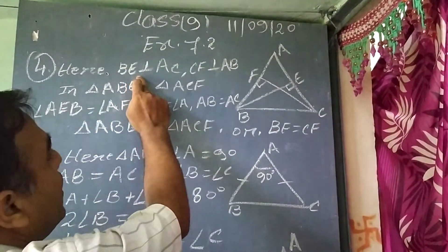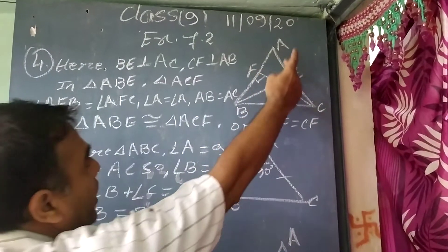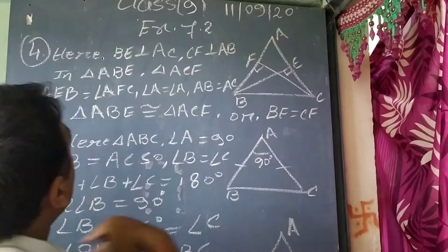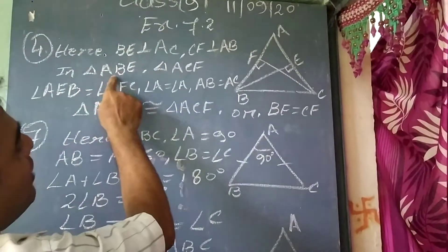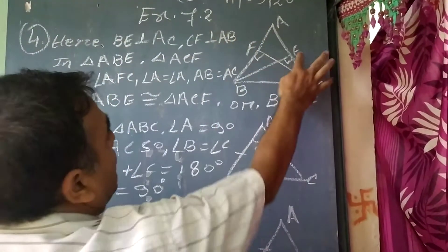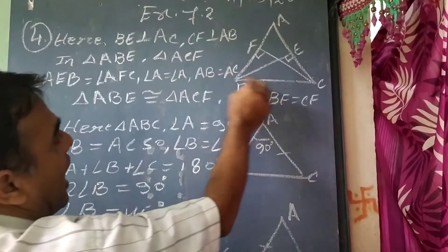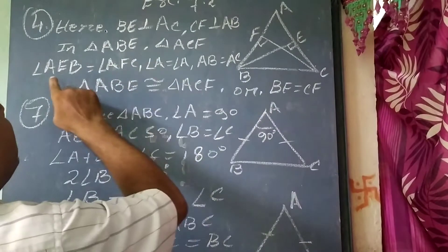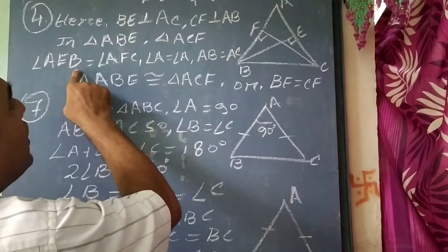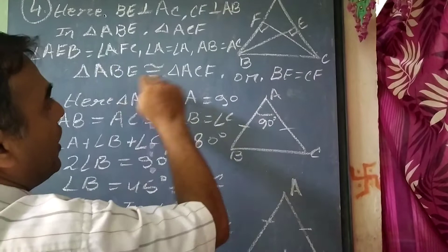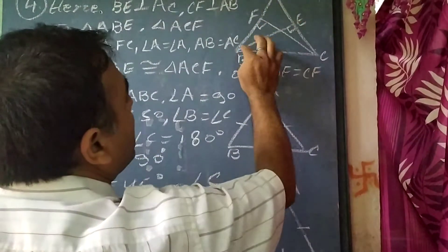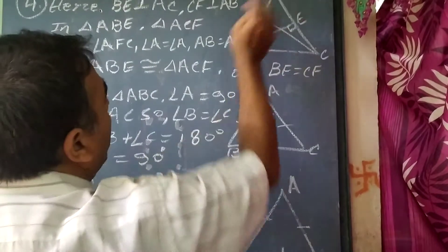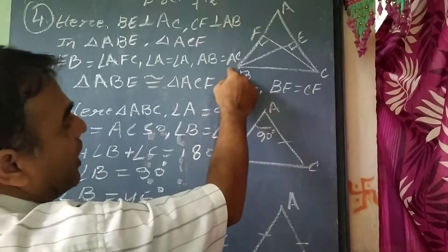Here BE is perpendicular to AC and CF is perpendicular to AB. So in triangle ABE and ACF we have that angle AEB equal to angle AFC, that is 90 degrees. Angle A equal to angle A, that is common, and AB equal to AC as it is given, that is isosceles triangle.